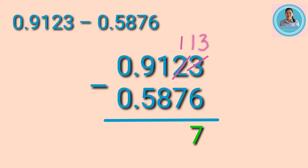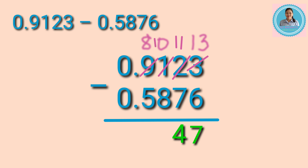Next, 1 minus 7 cannot be done, so we need to borrow again from the digit to the left, which is 1. So 1 will become 0 and the number 1 that was borrowed becomes 11. So 11 minus 7 equals 4. Next, 0 minus 8 cannot be done, so we need to borrow from 9 — 9 will become 8 and 0 becomes 10. 10 minus 8 equals 2, and then 8 minus 5 equals 3.